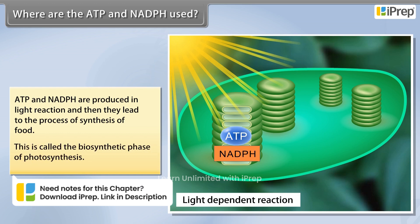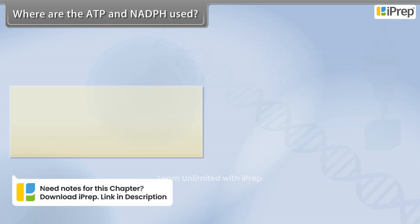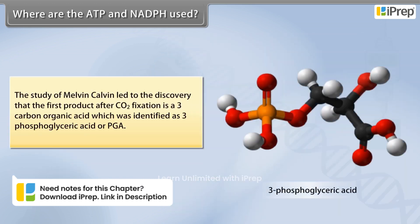This is called the biosynthetic phase of photosynthesis. The study of Melvin Calvin led to the discovery that the first product after carbon dioxide fixation is a 3-carbon organic acid.